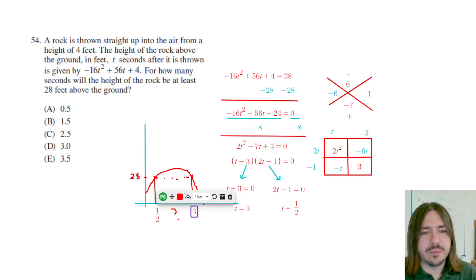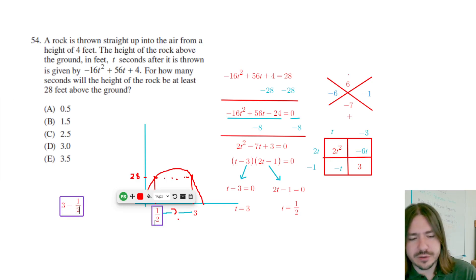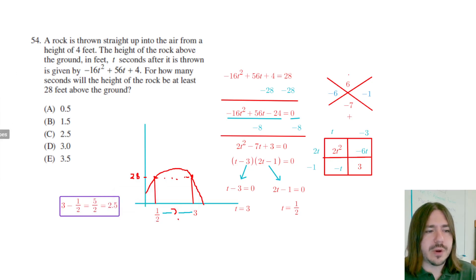So to answer this question, which if you recall, kind of got lost in the algebra there, but going back to the context, it's saying for how many seconds will the height of the rock be at least 28 feet off the ground? So the question is now, how long is it from one half of a second to three seconds? So to figure out what that time differential is, we are going to subtract three minus one half. Three is the same thing as six halves. So this would equal five halves or 2.5. So our answer for number 54 has got to be C.